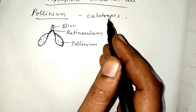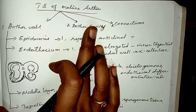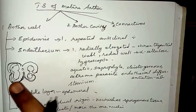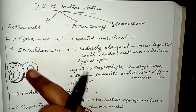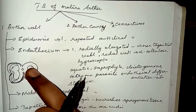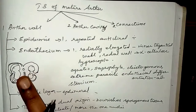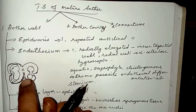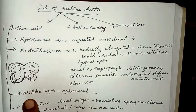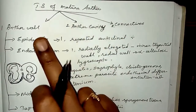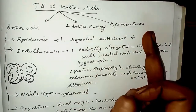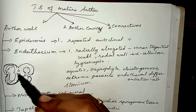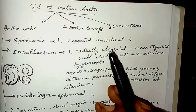The transverse section of a mature anther reveals the anther cavity surrounded by the anther wall. It is bi-lobed and each lobe has two thecae, making it dithecous; if single thecae, it is monothecous. A typical anther is tetrasporangiate — having four loculi. The TS of the mature anther reveals three main structures: the anther wall, the anther cavity, and the connective tissue which connects the sporangia.